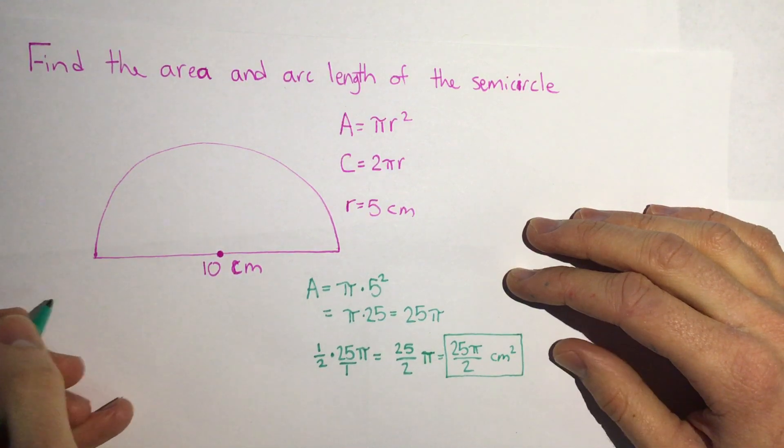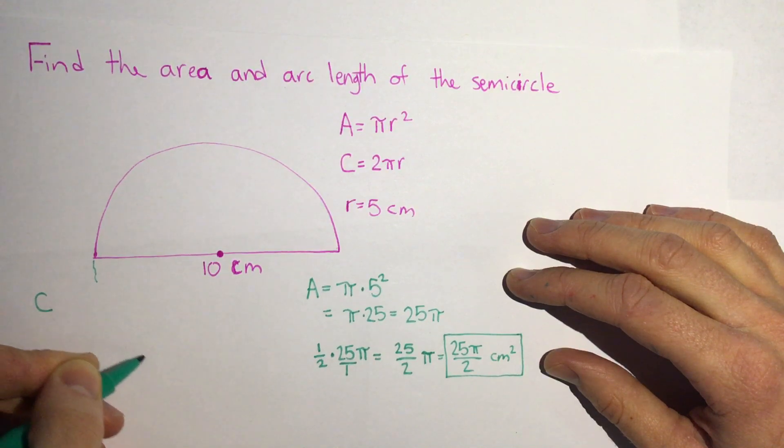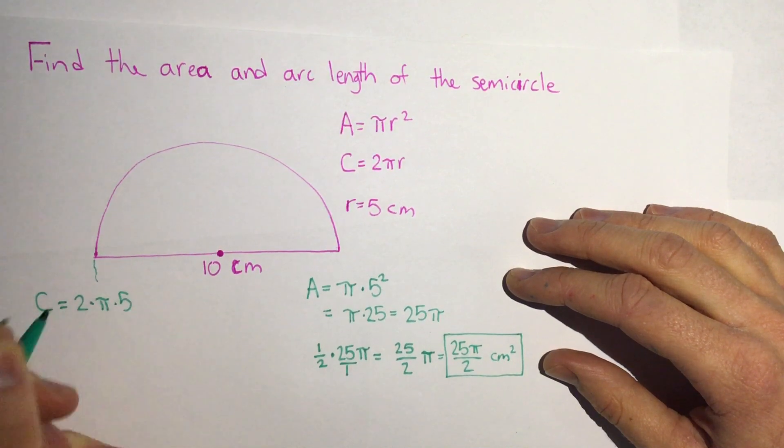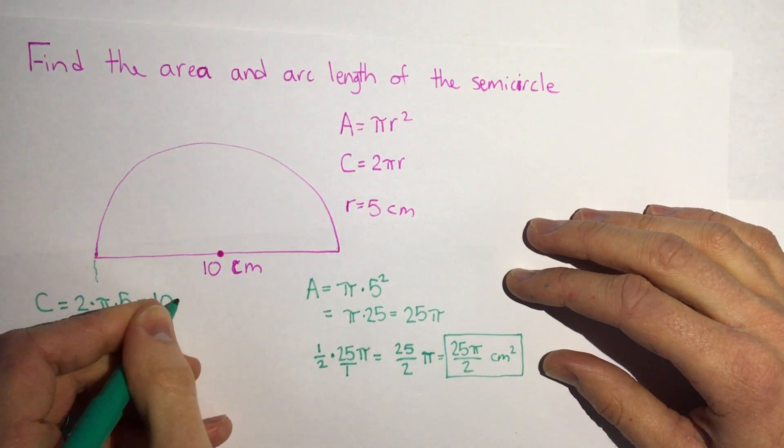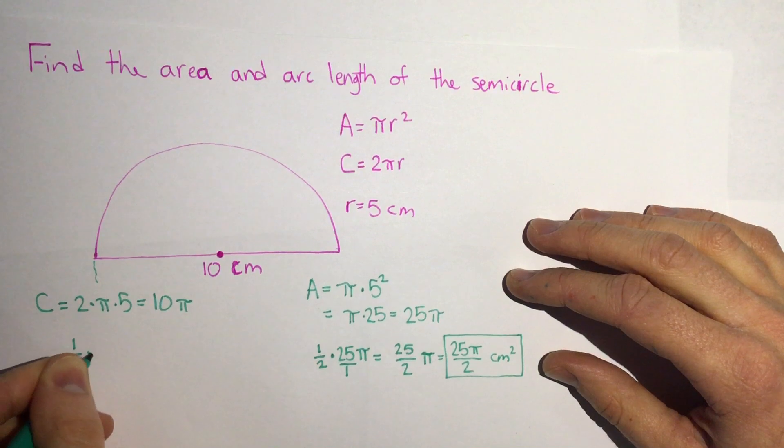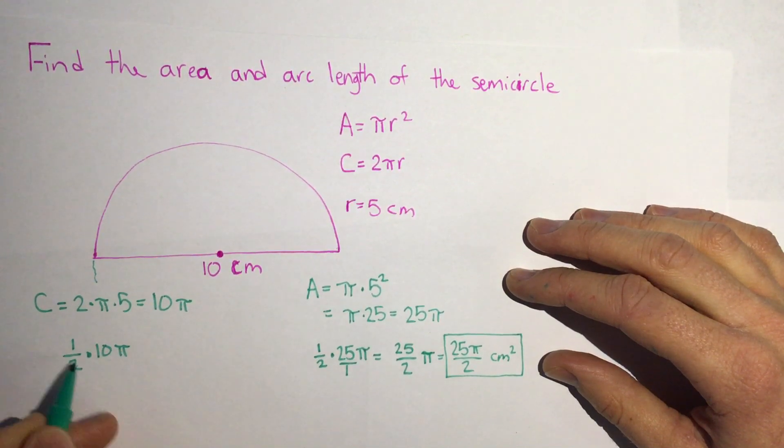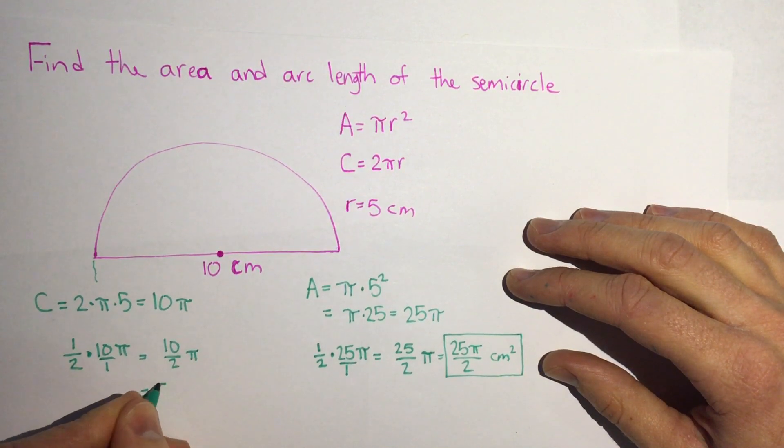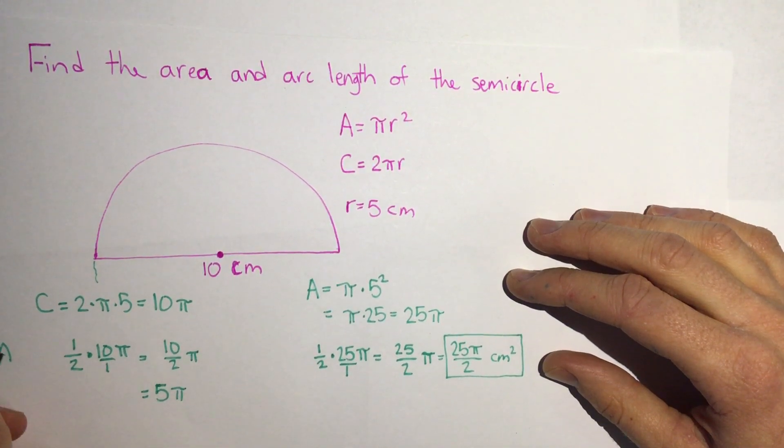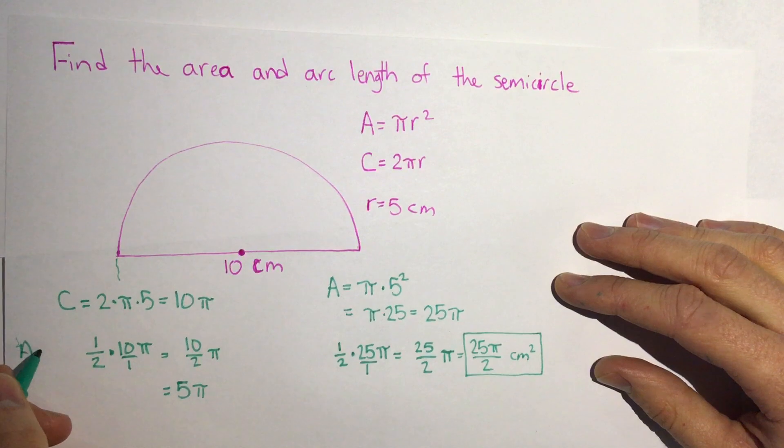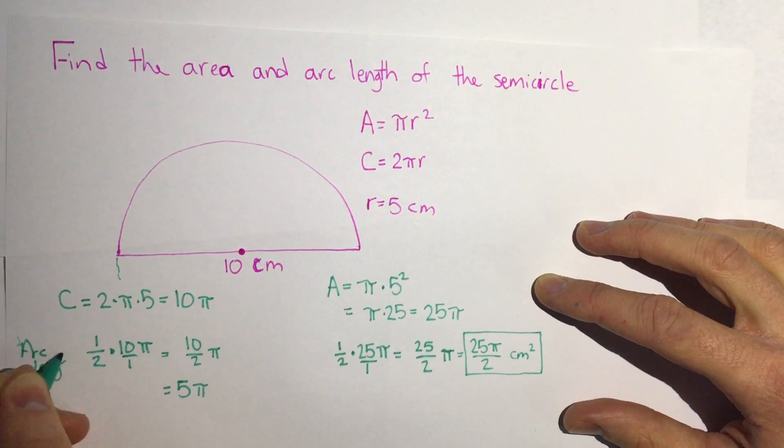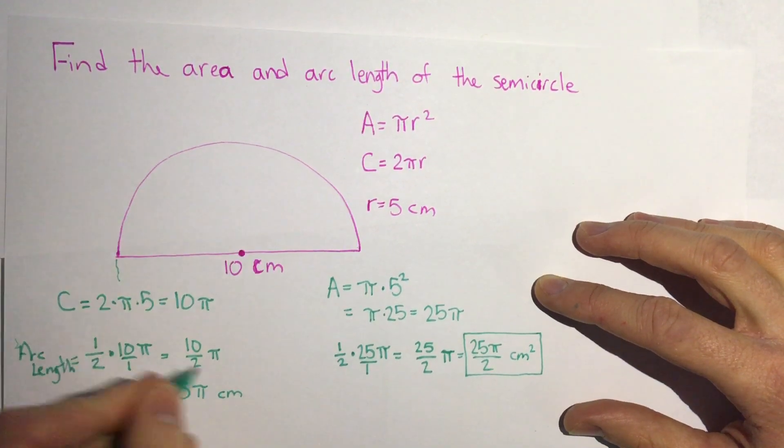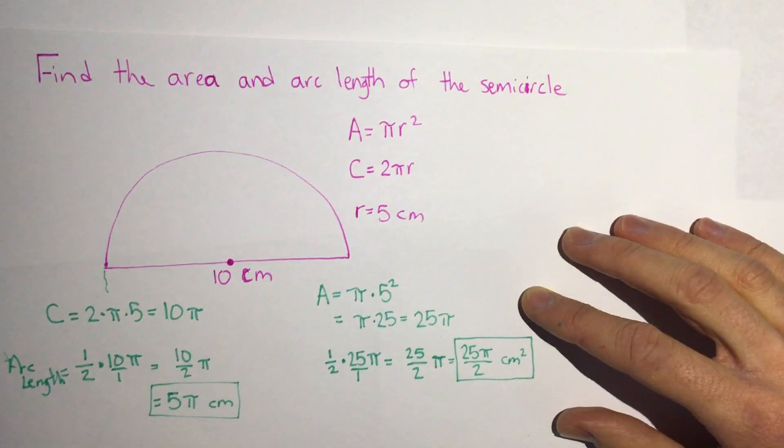For arc length we're gonna do the same thing, we'll find the circumference as though we have the whole circle. So the circumference is 2 times pi times 5 or 2 times 5 is 10, 10 pi and we're gonna do 1 half of that. 1 half times 10 pi. 1 half times 10 over 1 is 10 over 2 pi. 10 over 2 equals 5 so our arc length equals 5 pi and that's 5 pi since it's just a distance it's not square units squared or anything, it's just 5 pi centimeters.